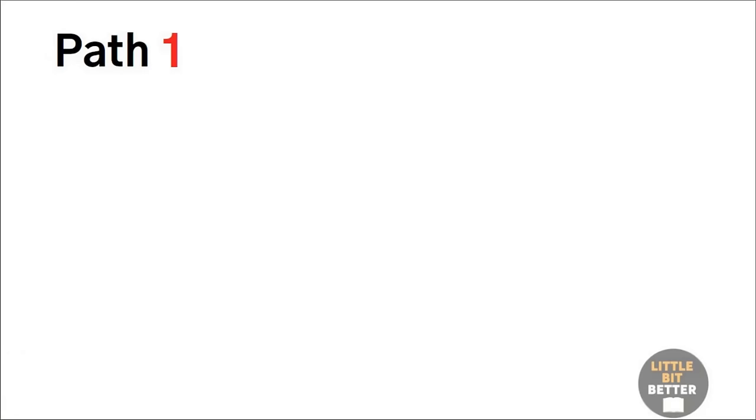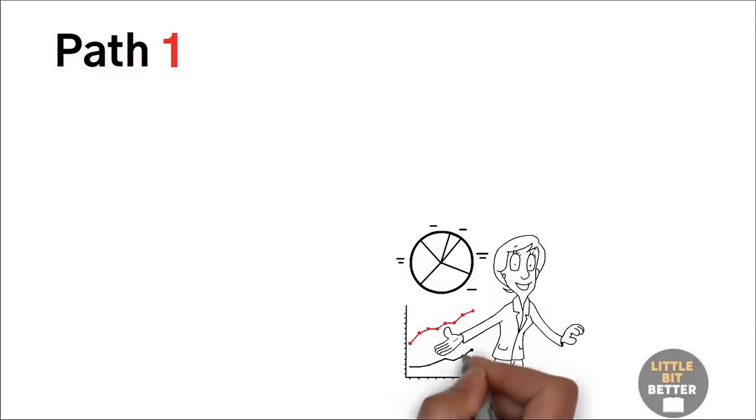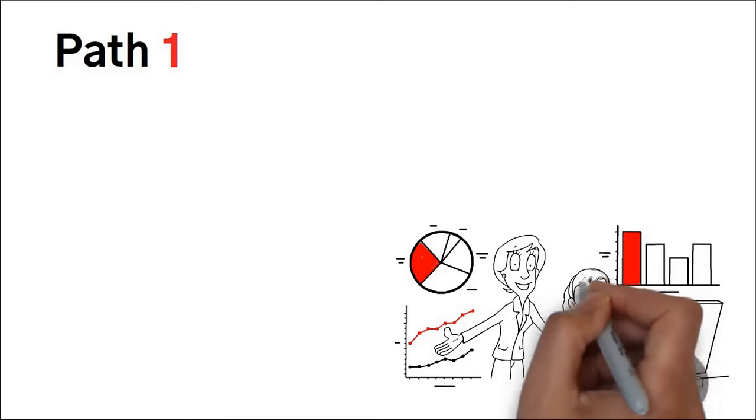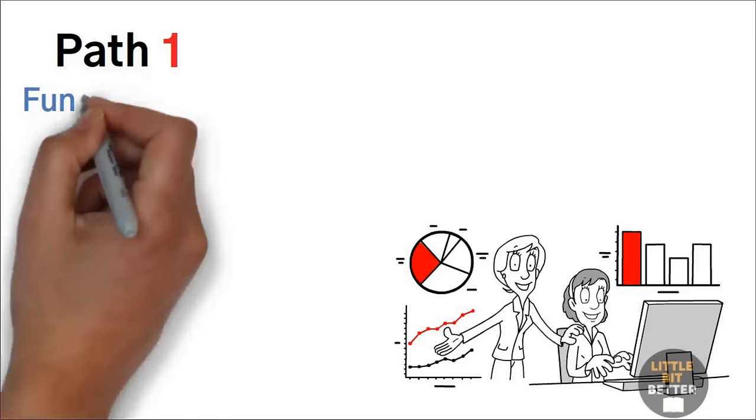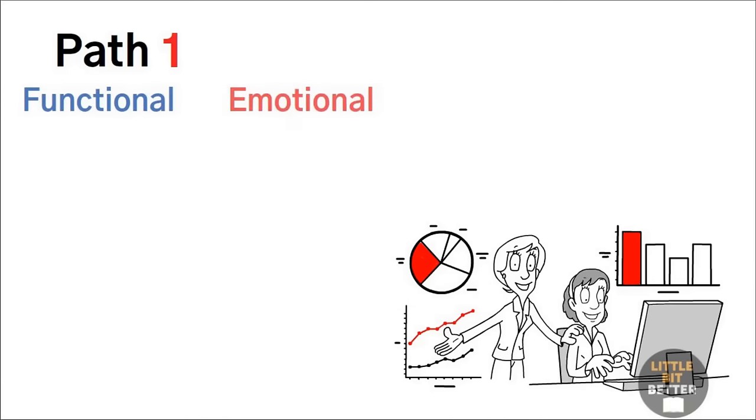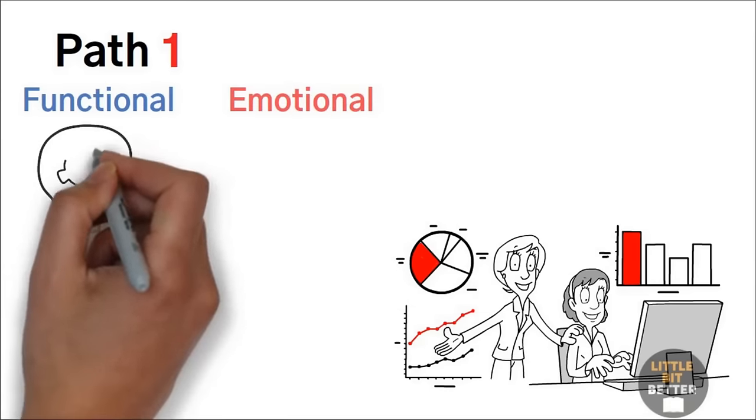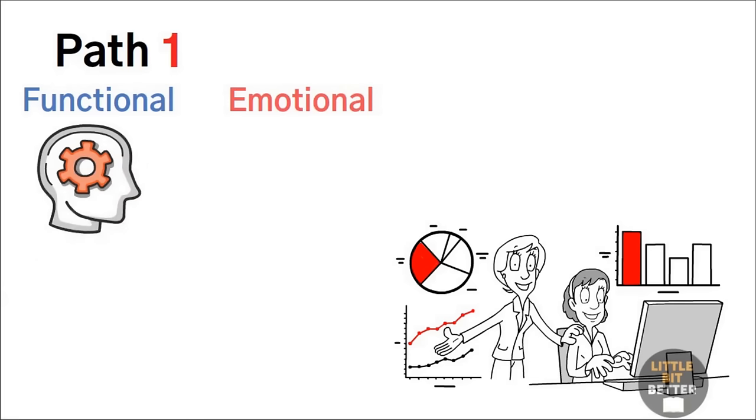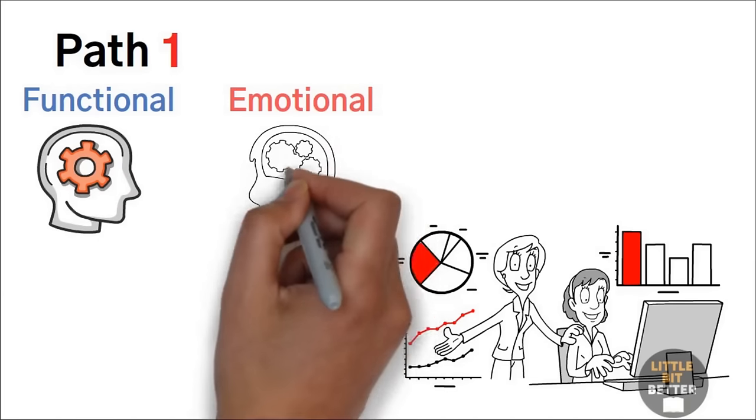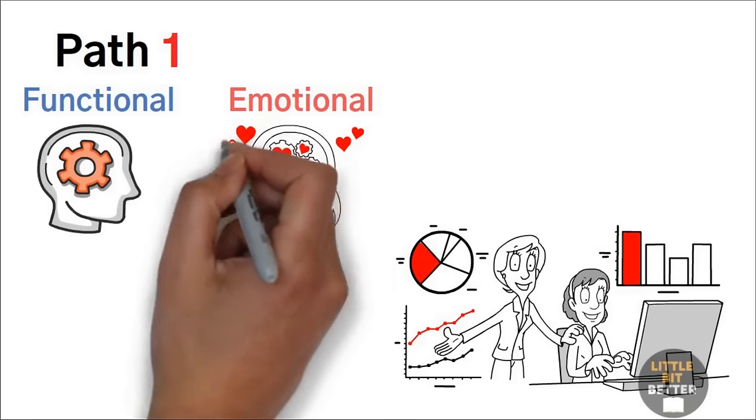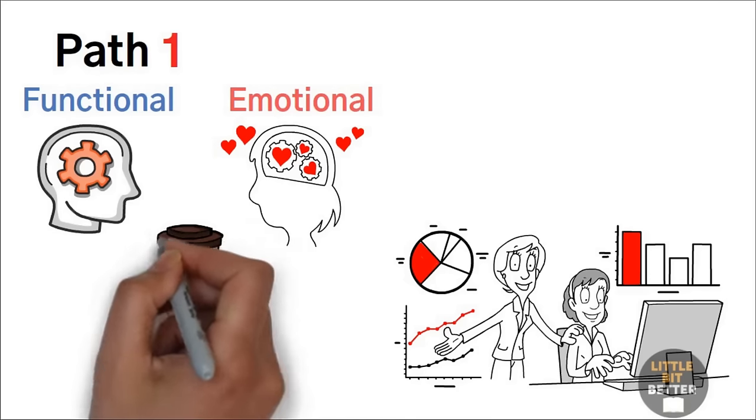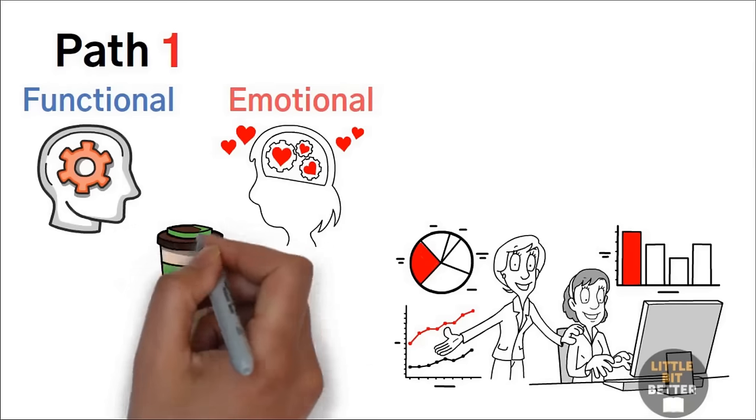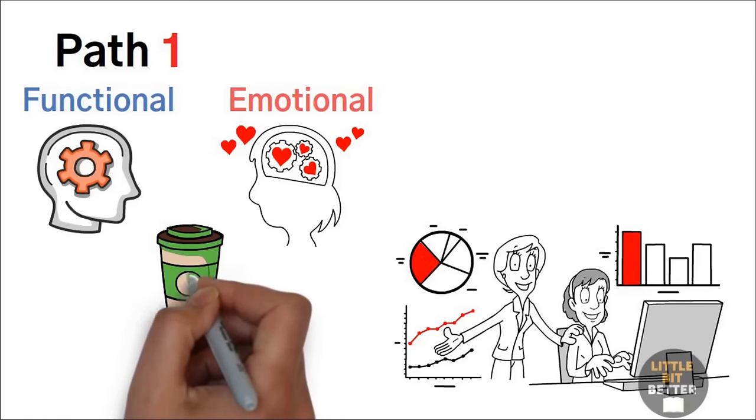Path number one. Look across functional or emotional appeal to buyers. In every industry, companies compete based on two bases of appeal, functional or emotional. Functional appeal means offering a product or service based on its usefulness and price, while emotional appeal means offering a product or service based on feelings. For example, coffee is a functional product. But Starbucks turned it into an emotional product by creating a unique experience around it.